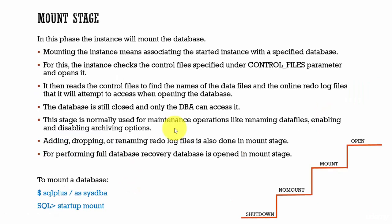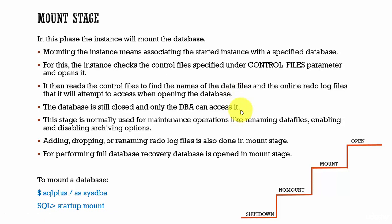The next stage is mount. Mounting means we are taking the instance and associating it with a specified database. In order to do that, the instance checks the control files specified in the control files parameter and then opens them. Once opened, it reads the names of the data files and the online redo log files, and will use those files to open the database. So far, the database is not open for all users — the database is still closed, and only the DBA can access it.